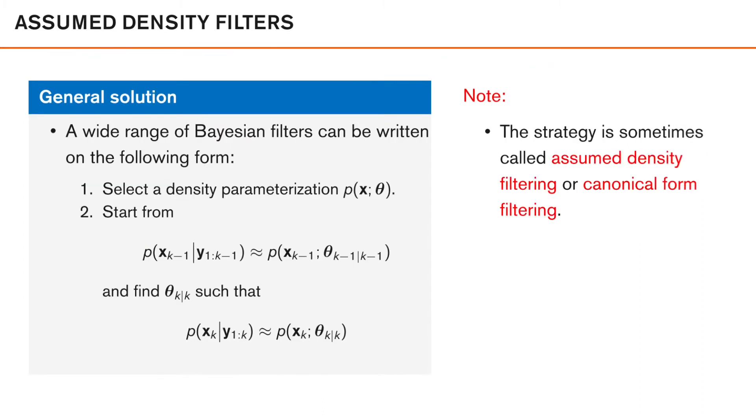That was the important family of Gaussian filters, which we will study extensively in this course. If we try to generalize this, however, there's a wide range of Bayesian filters that can be written on the following form. First, we select a density parameterization, p and theta, where theta here is the parameters that we use to describe our density. In the Gaussian filtering case, p here is a Gaussian density, and theta contains the mean and covariance that is needed to describe this density.